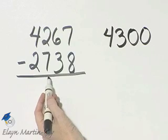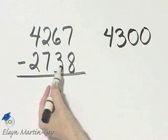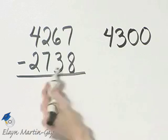Let's do the same thing here. Round to the nearest hundred. Hundreds place. This digit is less than five. I do not add one to this digit.